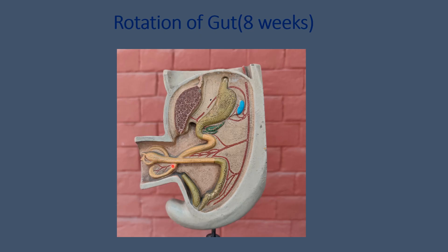This specimen is showing the stage of rotation of the midgut loop when the pre-arterial segment has already come towards the left side and the descending colon is on the left side. The post-arterial segment is now protruding through the umbilical opening. We can make out the stomach here, liver here. This is the region of the foregut and then this is the region of the midgut.